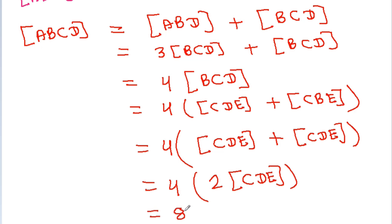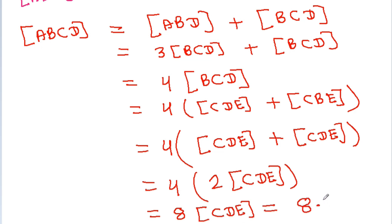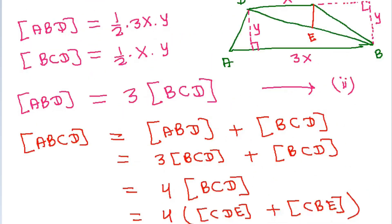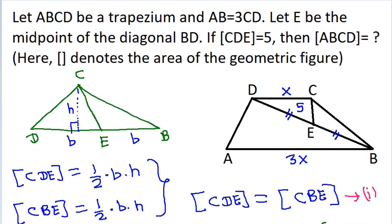So area of ABCD is 8 times area of CDE, and area of CDE is 5, so it will be 40. Therefore, area of ABCD is equal to 40.